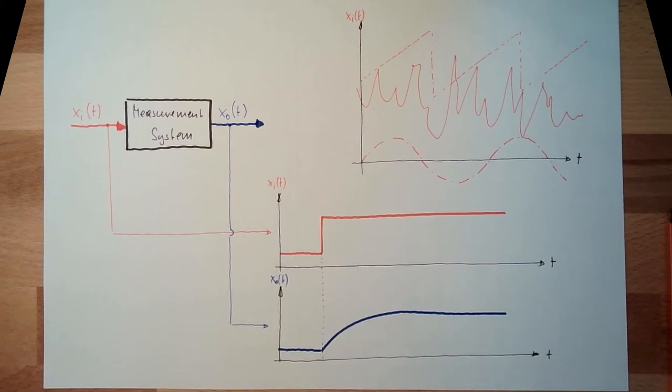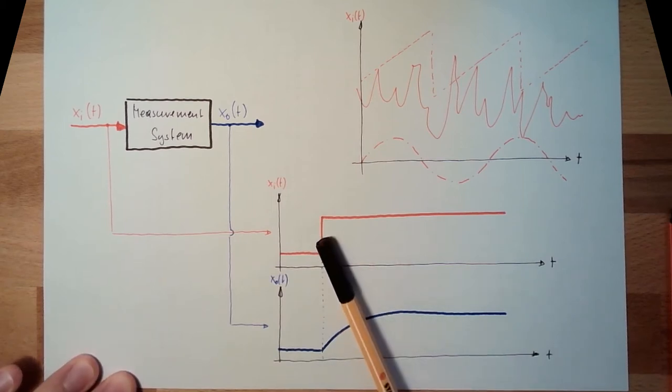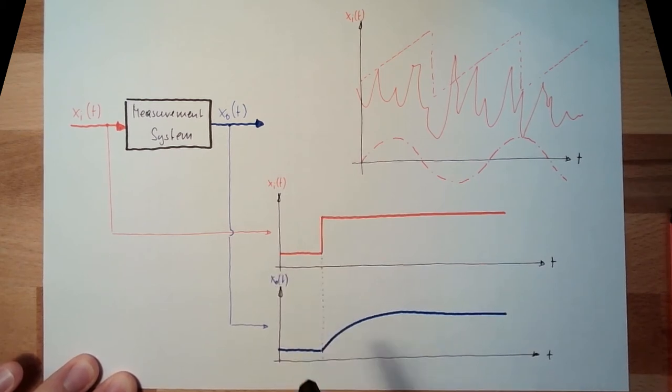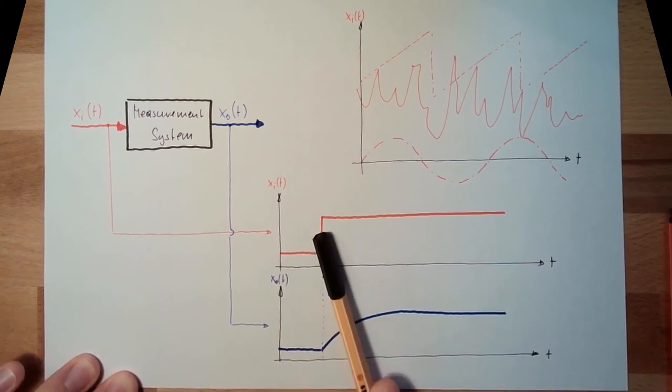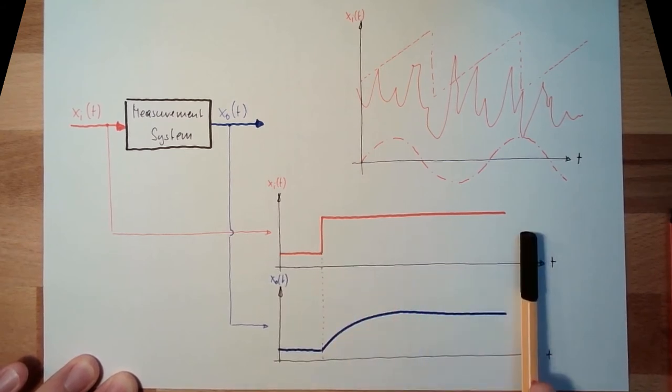There are three test functions which are usually used. One test function is this one: jump function, usually from zero to some value one. And observe the output, usually zero, and goes to somewhere.